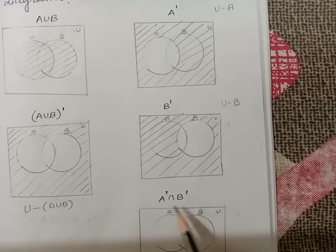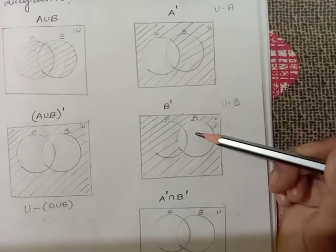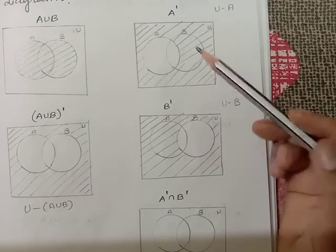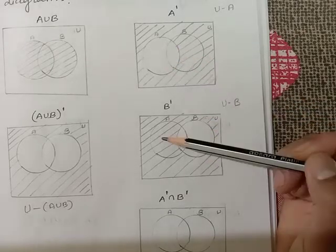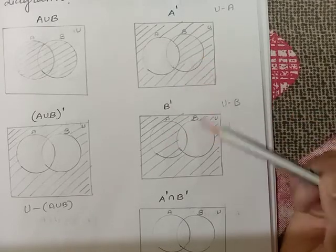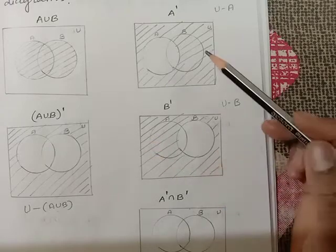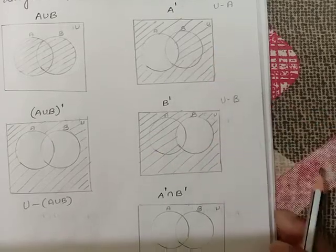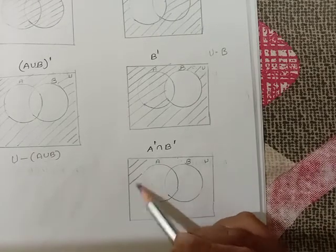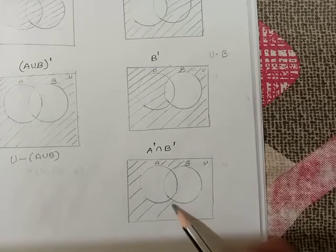Now for A' intersection B', we compare the A' and B' diagrams and find what is commonly covered. In A', circle A is not covered but the rest is. In B', circle B is not covered. The common region in A' and B' is only the outer portion, so we cover only the outer portion.